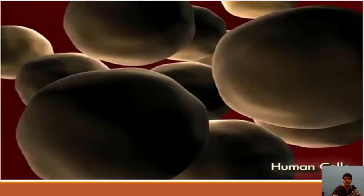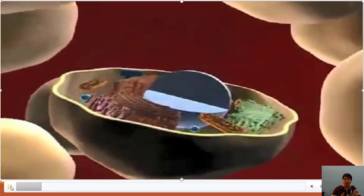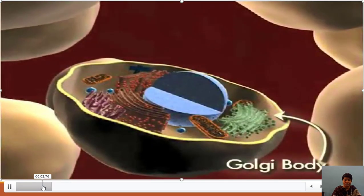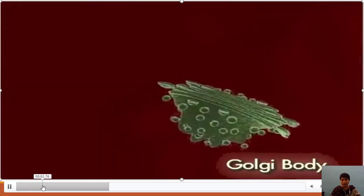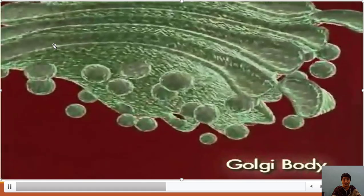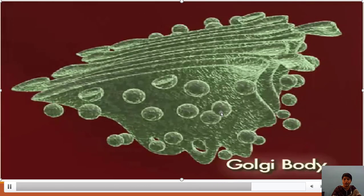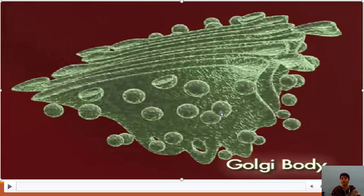Now I will show you the structure of Golgi complex — observe this video carefully. These are human cells with different organelles. You are particularly observing the Golgi body: these are the different membranes, and at the end of these membranes you find sacs. The round balls you are observing are the vesicles produced by the Golgi body, which contain materials modified in the Golgi complex.